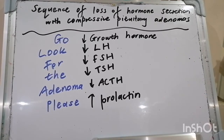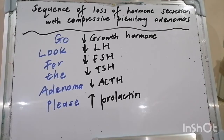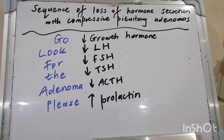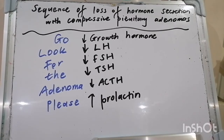For acromegaly, transsphenoidal surgery is the primary treatment — drugs will be discussed in a forthcoming video. For Cushing's disease, transsphenoidal surgery. For TSH-secreting adenoma, transsphenoidal surgery is first line though cure rates are low — consider octreotide and antithyroid medications as appropriate. For non-functional pituitary adenoma, replace any hormone deficiencies and consider transsphenoidal surgery if symptomatic or causing mass effect.